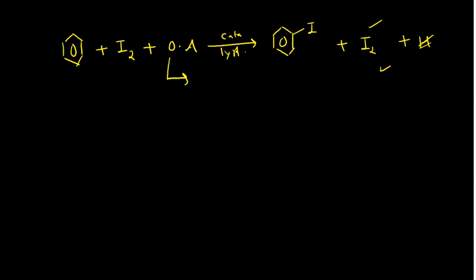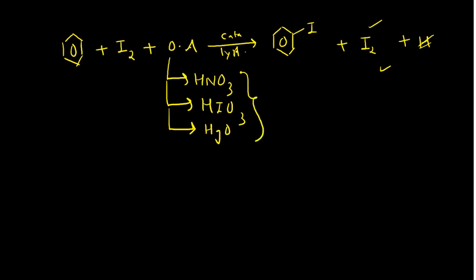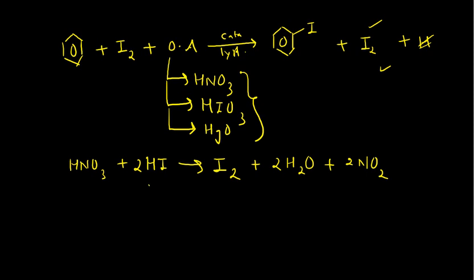The oxidizing agents you can use are HNO3, HIO3, or mercury oxide (HgO). For example, if you take HNO3, it will quickly react with the HI formed in the reaction and oxidize it — the other byproducts being 2H2O and 2NO2. Once HI is oxidized, the reaction is pushed in the forward direction and you get a better yield of iodobenzene.